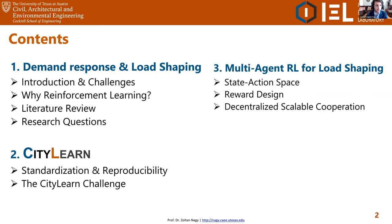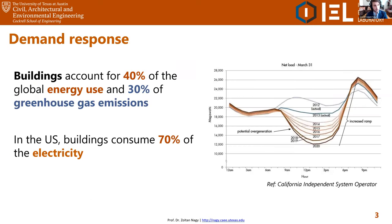So first, the big picture: what is demand response? In the US, buildings account for about 70 percent of electricity consumption, and globally buildings account for about 40 percent of global energy use and 30 percent of greenhouse gas emissions. However, it's not only important to reduce energy consumption but also to consume more effectively at the right time — so it's very important at what times during the day we consume electricity.